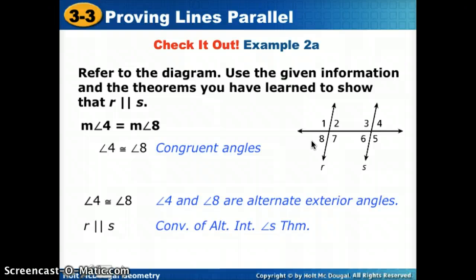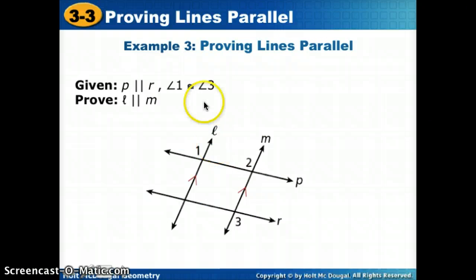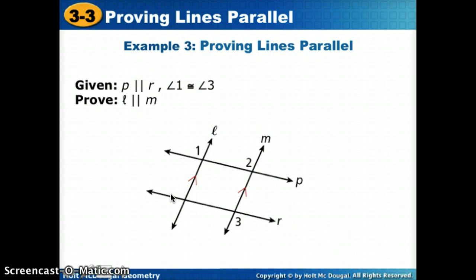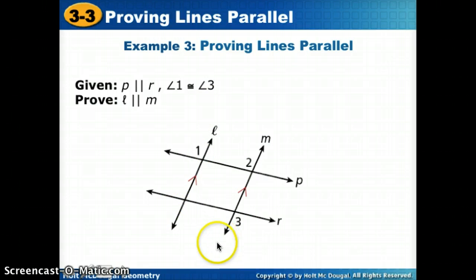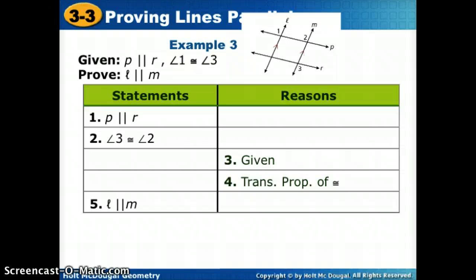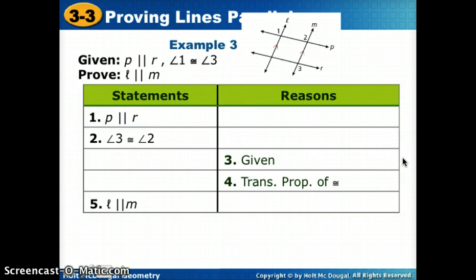Now we're going to try one that's a little more difficult — we're going to do a proof. Given that P and R are parallel and angle 1 is congruent to angle 3, we want to prove that L is parallel to M. We'll kind of have to go back and forth here as we try to fill in the missing pieces. We start by stating that P is parallel to R, and we always start with the given, so the reason is: given.